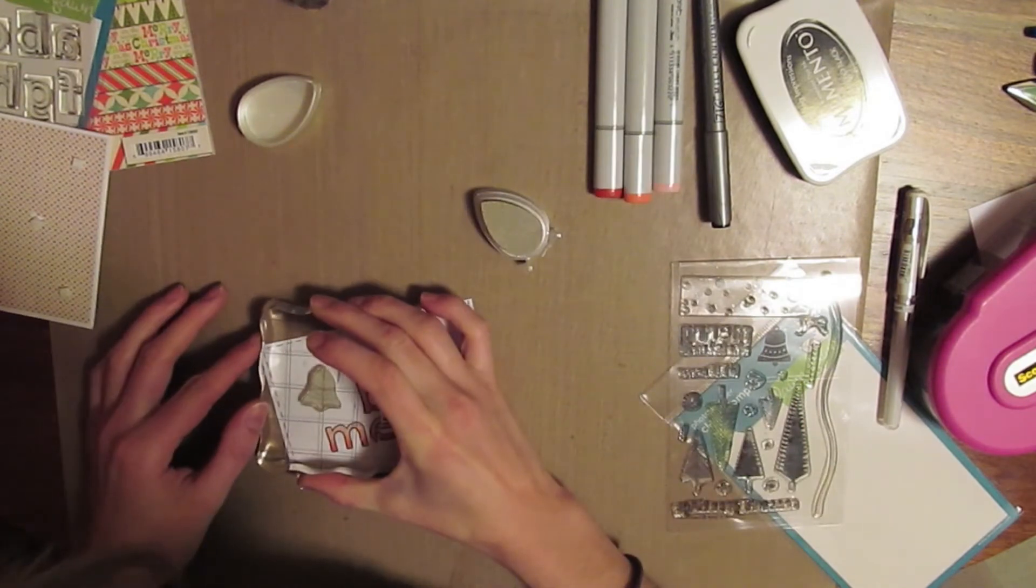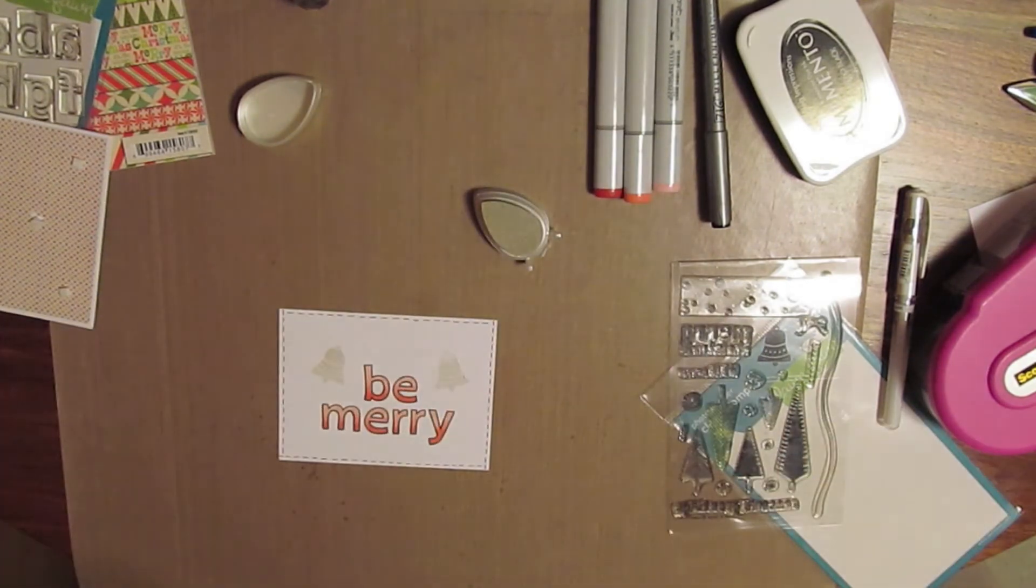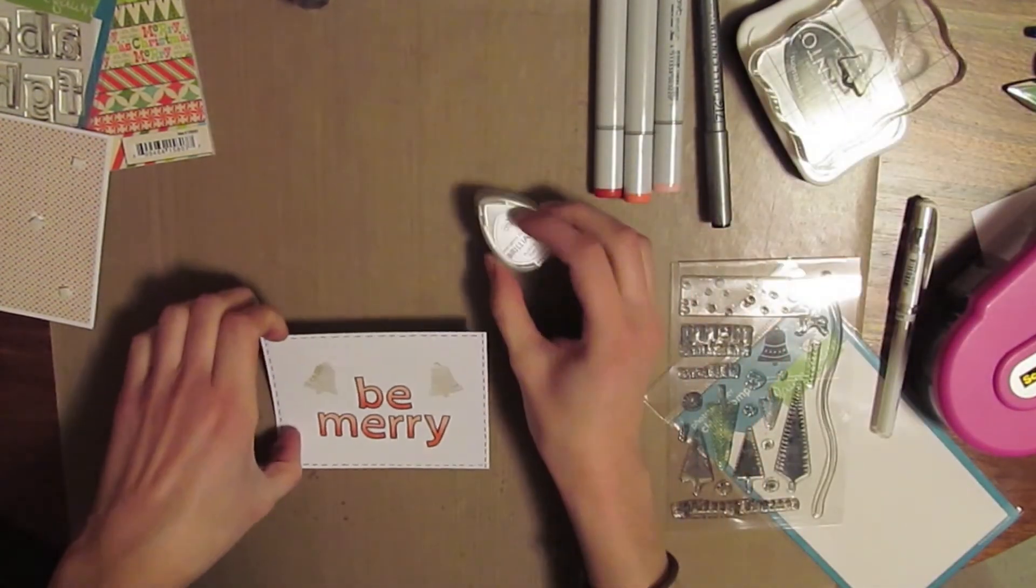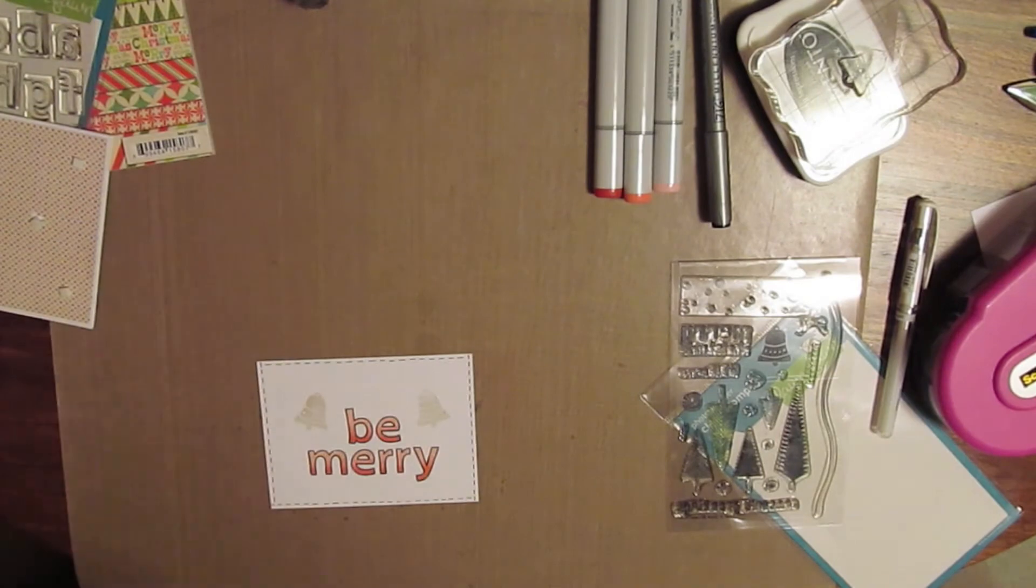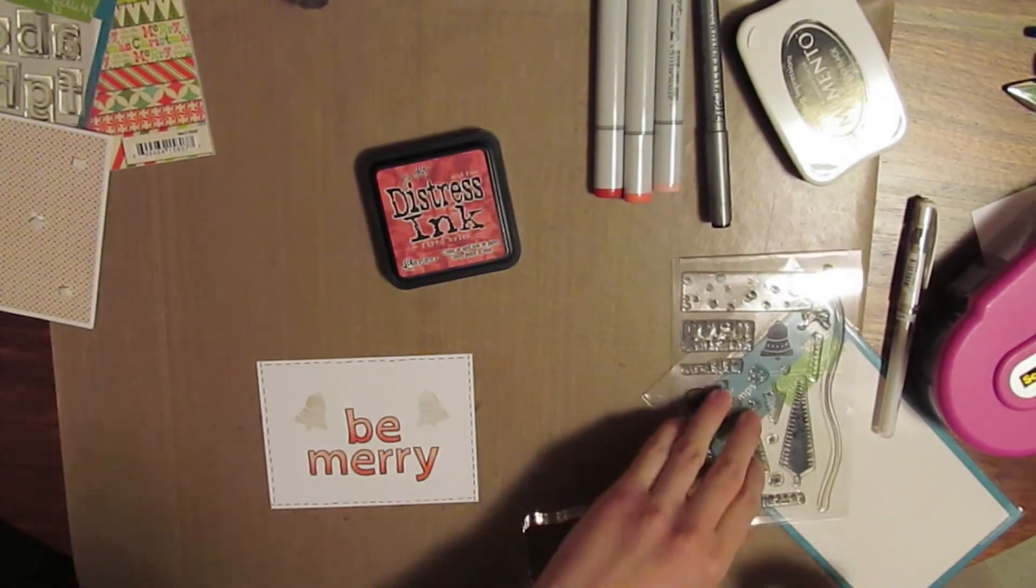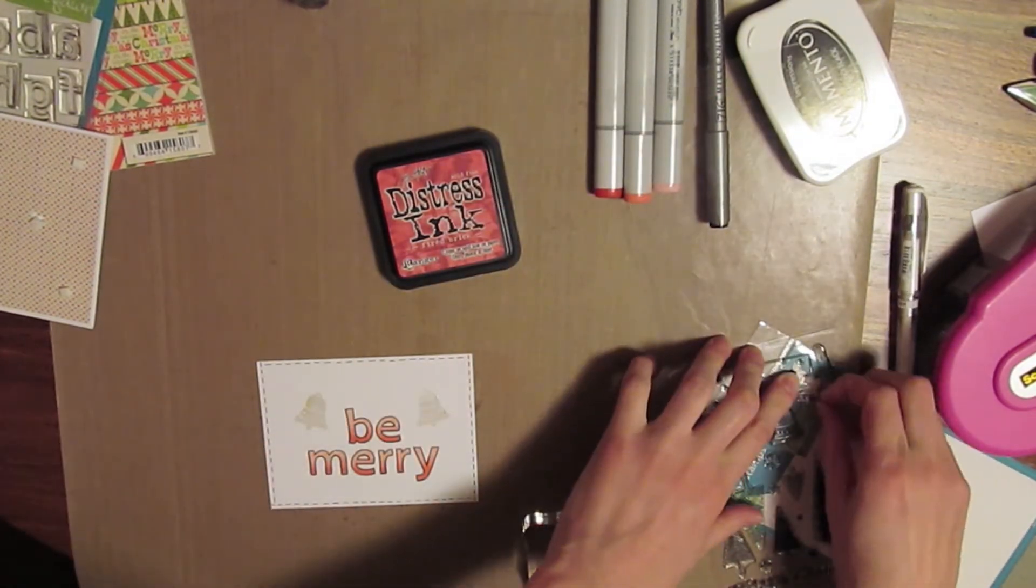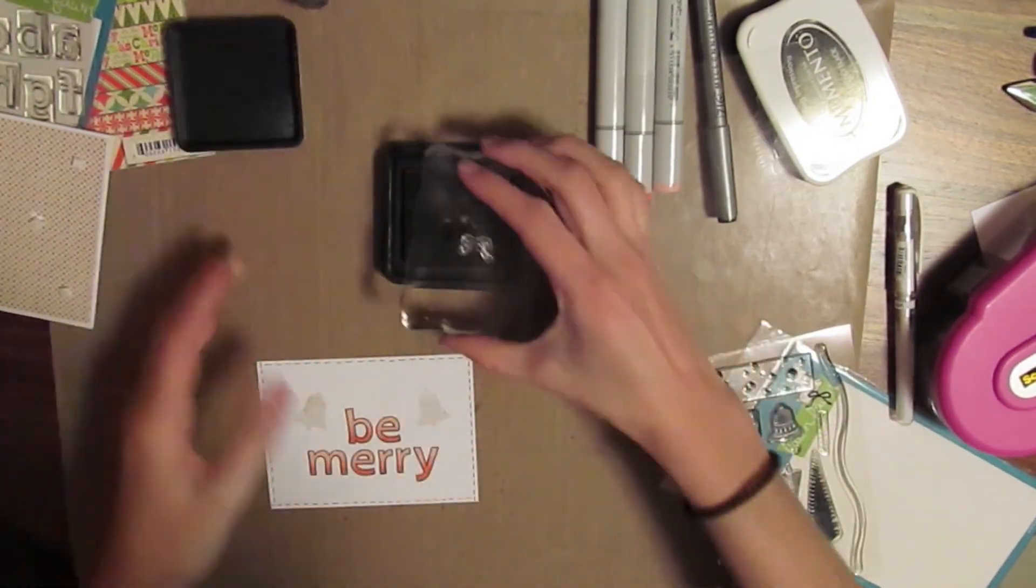They're kind of hard to see, but depending on the light you can really see them. And then I stamped the bows on top of the bells with some fired brick distress ink, just to tie it in with the red in my pattern paper and in my letters.